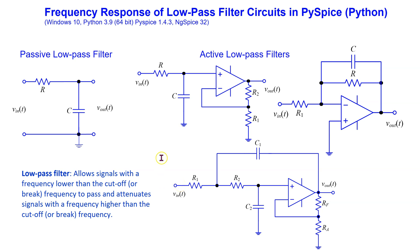Hello everyone. In this video we will look at how to plot the frequency response of popular passive and active low pass filter circuits in PySpice. Recall that a low pass filter is a circuit that allows signals with a frequency lower than the cutoff frequency to pass, and it attenuates signals with a frequency higher than the cutoff frequency.